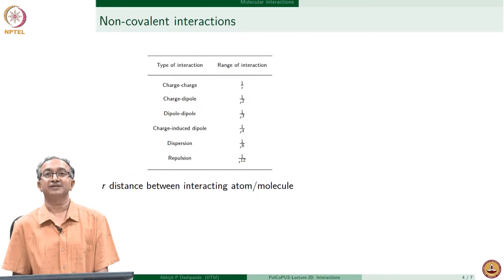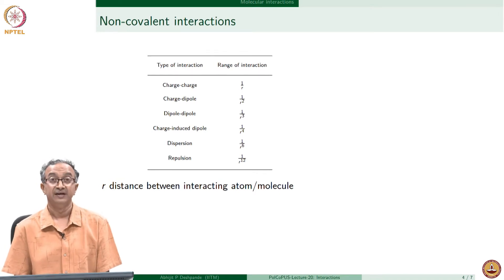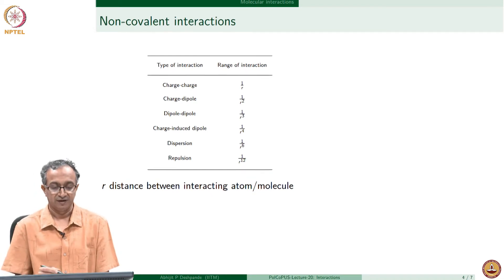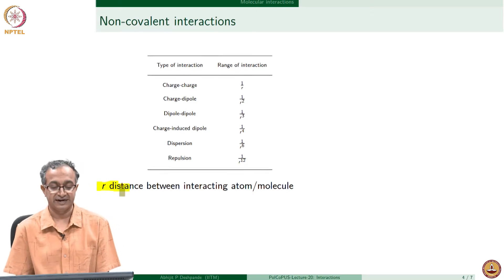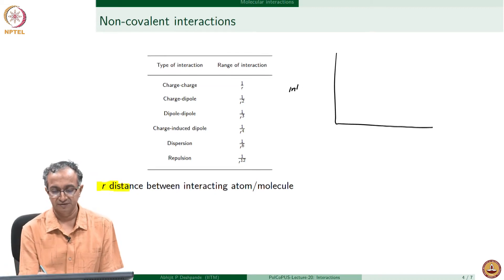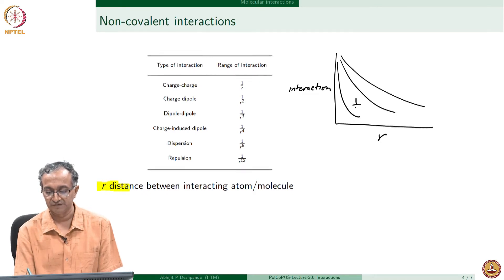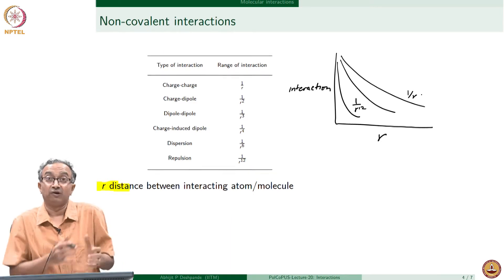We will look at some specifics of these different types of non-bonded interactions. What we notice is they act over a range of distances. If R is the distance between the two atoms or molecules which are interacting, many of these have a very different range. If you look at the interaction as a function of R, they have very different profiles — for example, 1/R¹² will be very steep while 1/R will be very gradual. Some of them are long-distance interactions, so even if atoms and molecules are far apart, they can still feel the force of attraction.